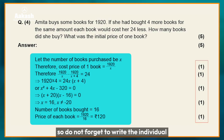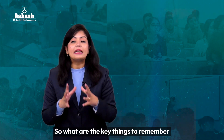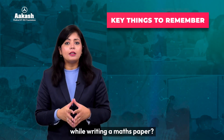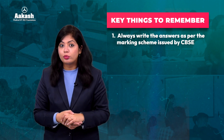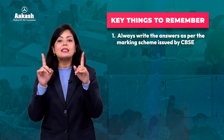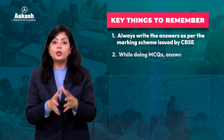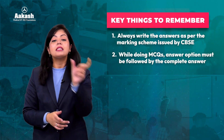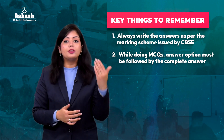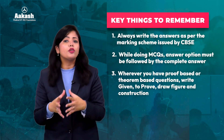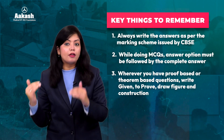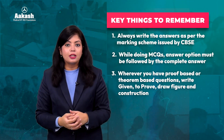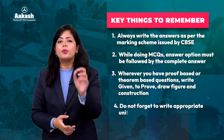So do not forget to write the individual equations as well as show proper calculation. So what are the key things to remember while writing a maths paper? First, always write the answers as per the marking scheme issued by CBSE. Stepwise marking is the crucial thing here. Point number two, for MCQ answers, the option must be followed by the complete answer. Point number three, wherever you have proof-based or theorem-based questions, always write the given part, what to prove, followed by a figure wherever required, and the construction. And lastly, do not forget to write appropriate units.